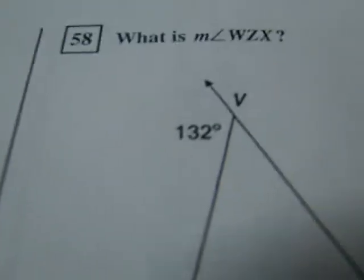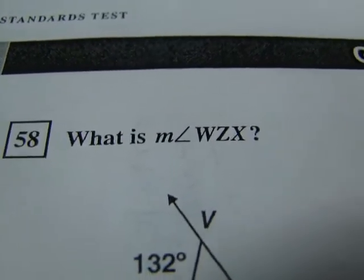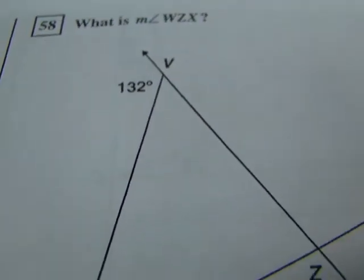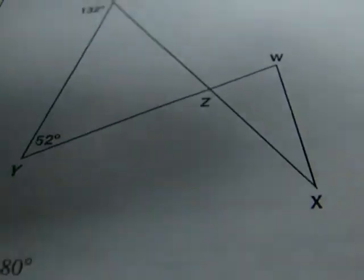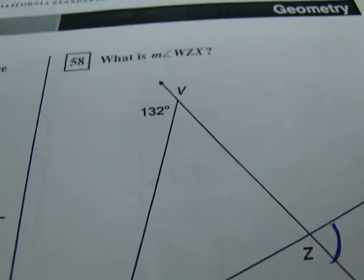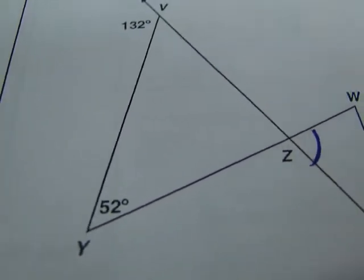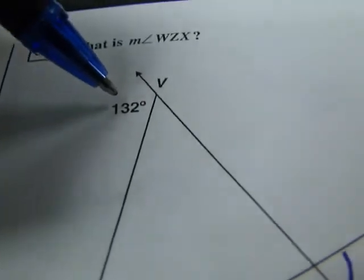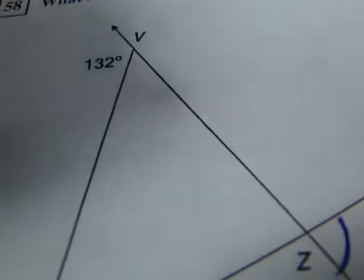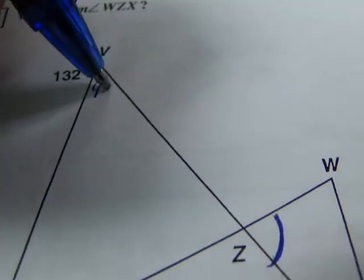Okay, number 58. What is the measure of angle WZX? So, WZX is going to be this angle that we're asking about. All right. So, let's see what we can figure out. We know this exterior angle is 132, and we know that these are linear pairs, so this one here has got to be 48.